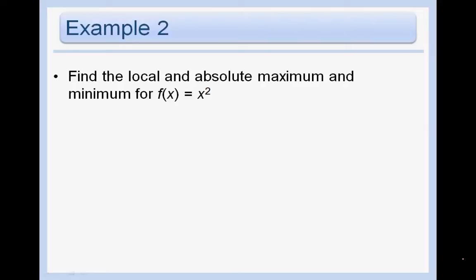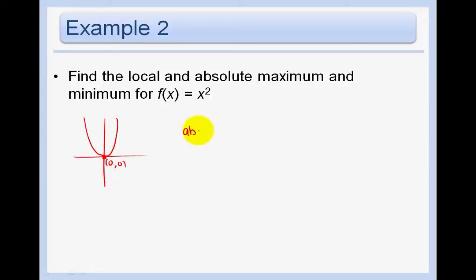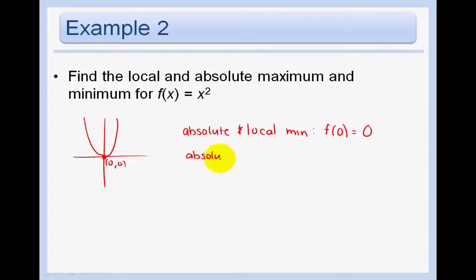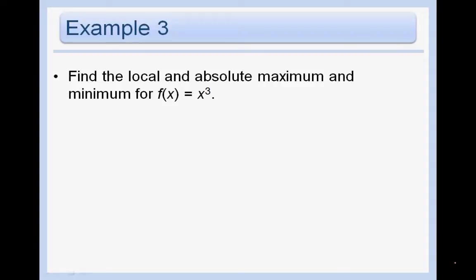Find the local and absolute maximum and minimum for f(x) = x². We know the graph is just a parabola opening up, with a minimum point at (0, 0). So the absolute minimum is the same as the local min: f(0) = 0. There is no maximum. For f(x) = x³, the function has no local or absolute extrema at all.